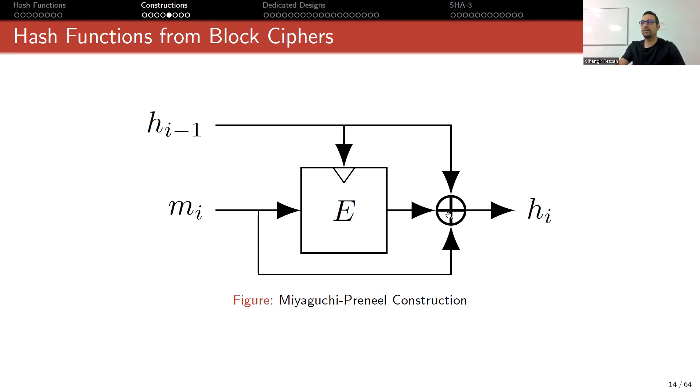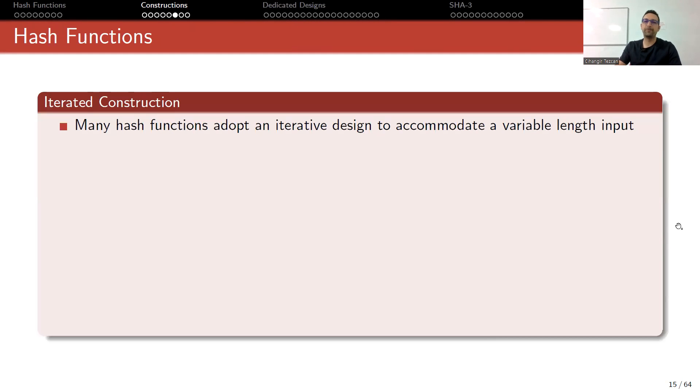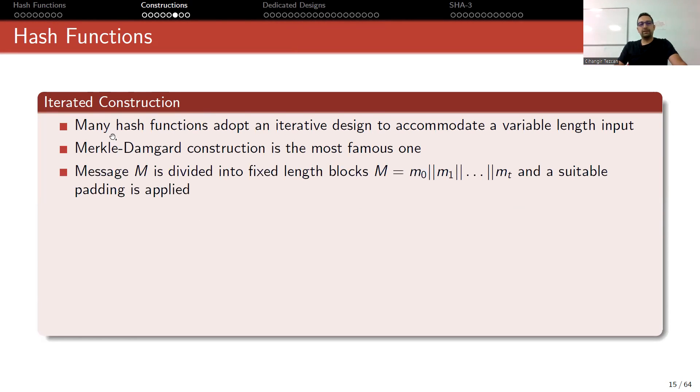Let's see what we use in practice. Generally, what we use is an iterated hash function. Many hash functions adopt an iterative design to accommodate a variable-length input. Merkle-Damgard construction is the most famous one. In this Merkle-Damgard construction, message m is divided into fixed-length blocks—these are generally large blocks like 512 bits or something—then you apply a suitable padding.